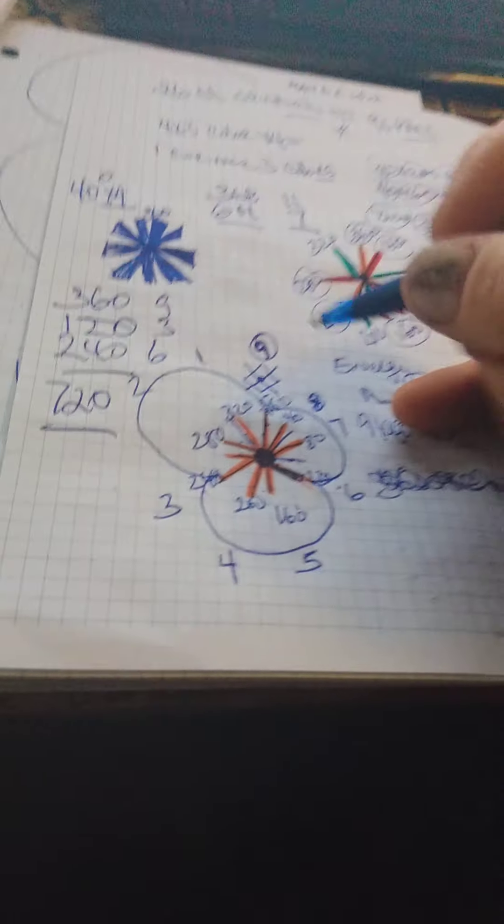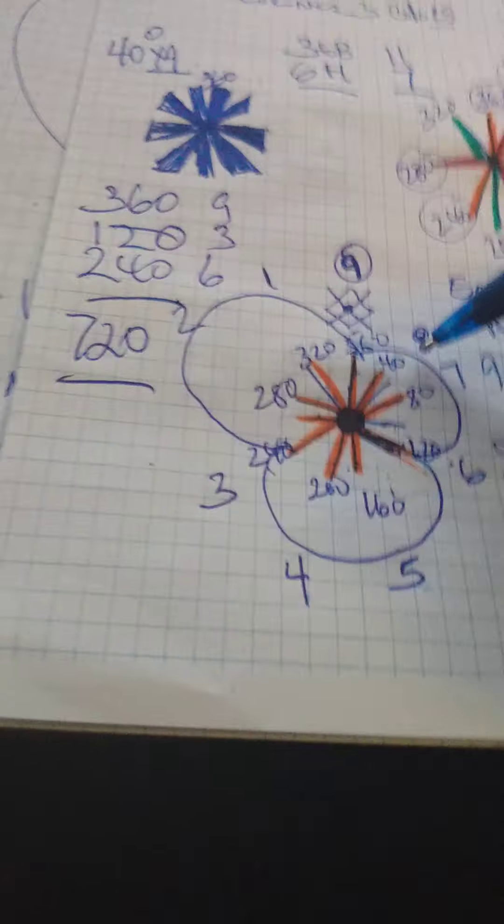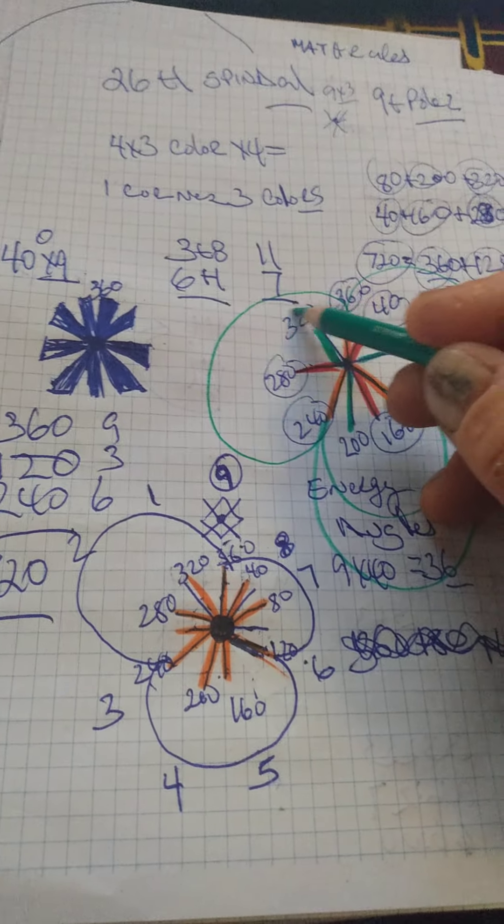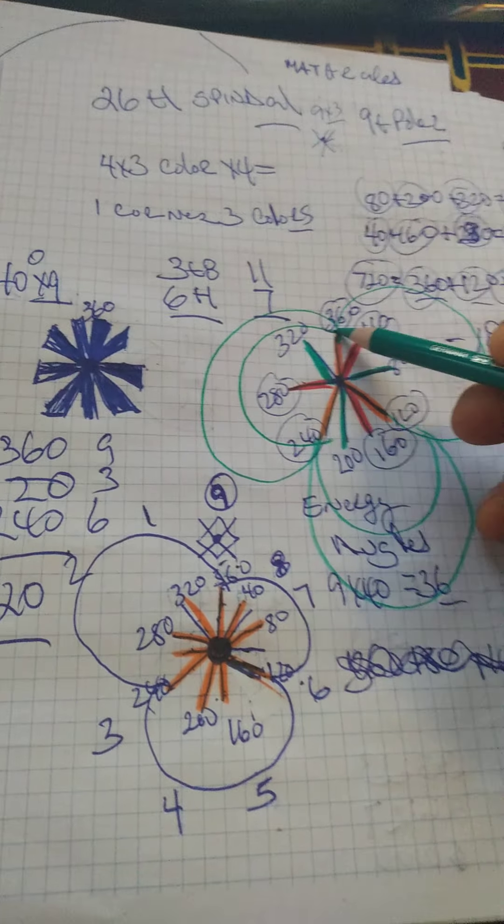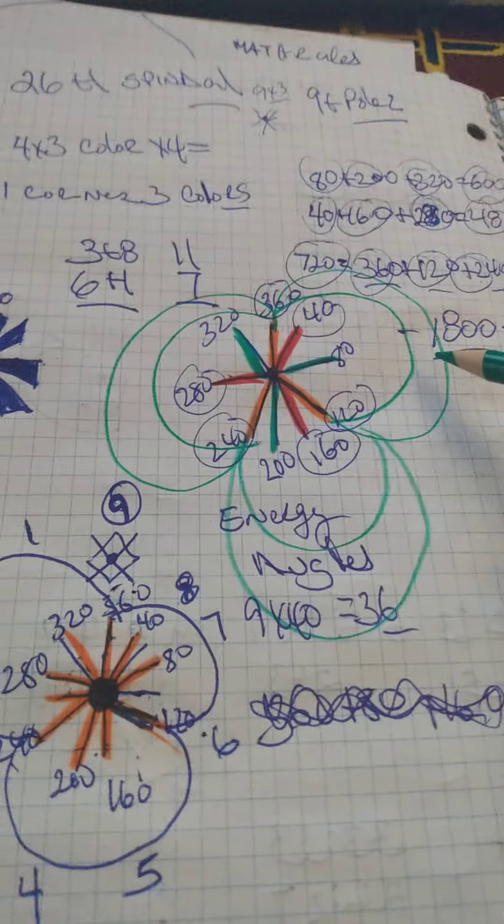So here we're coming into stage 2. In stage number 2, so we're going to continue this. So if you noticed in all of these, I create three. There are always three lines.